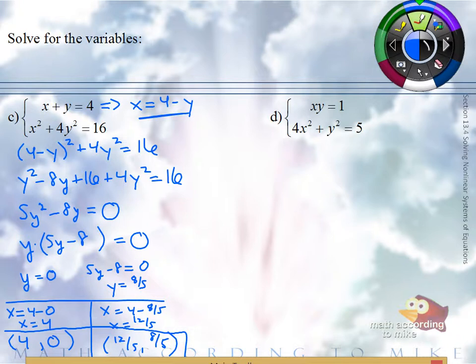What does X plus Y equals 4 look like if you were to graph it? It's a line. And the second equation — both variables are squared with a plus — that's a circle. So these are the two points where this particular line intersects this particular circle.